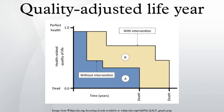If an individual's health is below this maximum, QALYs are accrued at a rate of less than one per year. To be dead is associated with zero QALYs, and in some circumstances it is possible to accrue negative QALYs to reflect health states deemed worse than dead.